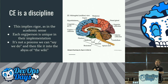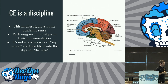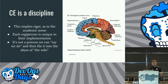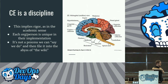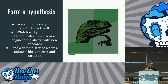Chaos engineering is a discipline — this implies rigor, in the academic sense. It's not something you just try casually. You should take time to study, understand, and apply it — like taking a college course, you'd read the textbook, do homework, think about it. Each organization is going to be unique in the implementation. It's not a process you file into the abyss of a wiki like Confluence where things go to disappear. You have to constantly be thinking about it and working on it.